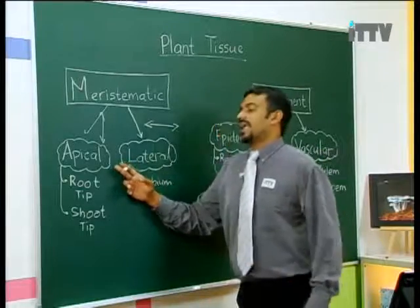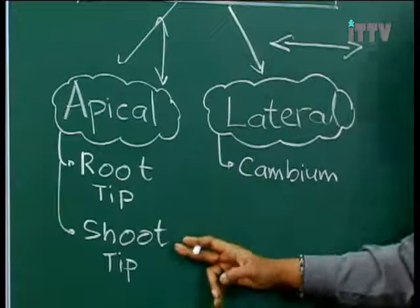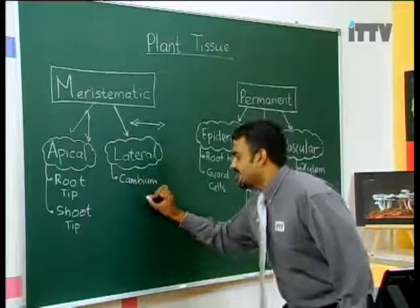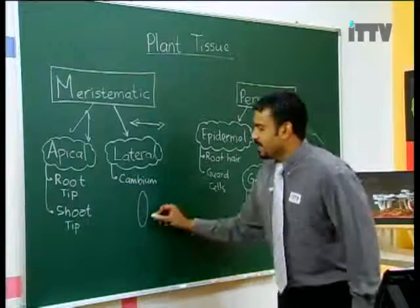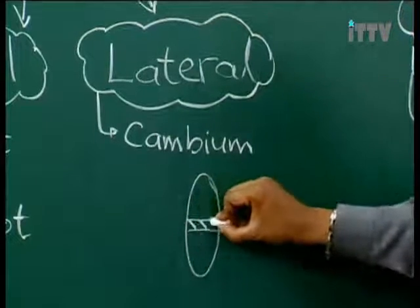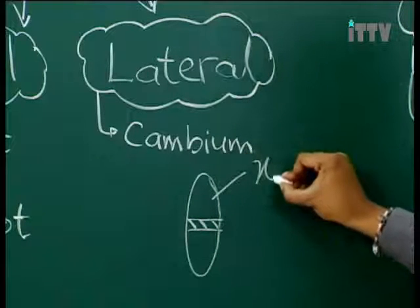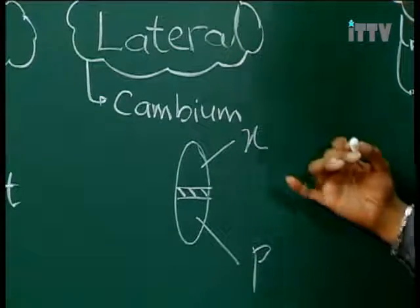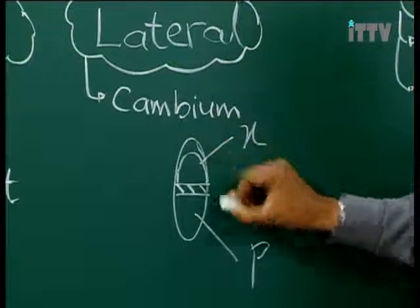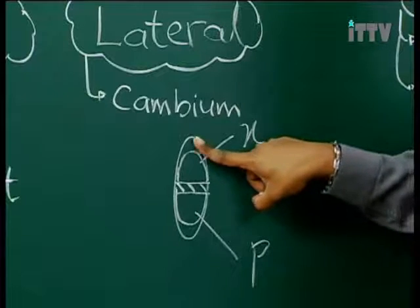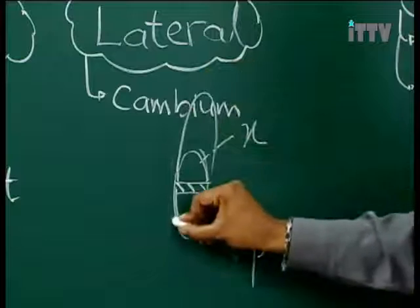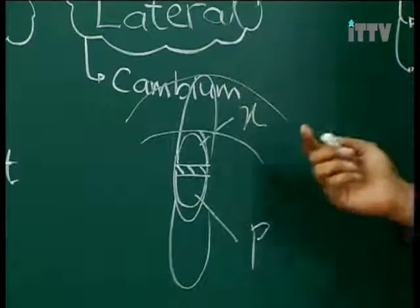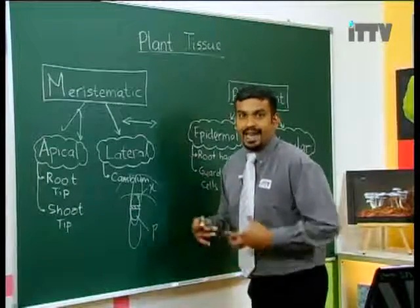Apical meristems can be found at two locations: the root tip and the shoot tip. Lateral meristems are found in the cambium. The cambium's function is to make new xylem and new phloem. Every time the cambium produces new xylem and phloem, the old xylem and phloem are pushed away, allowing the plant to gain diameter.